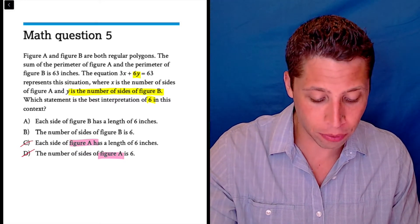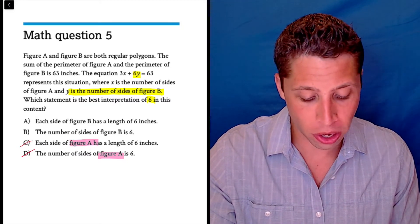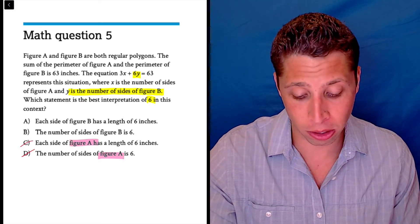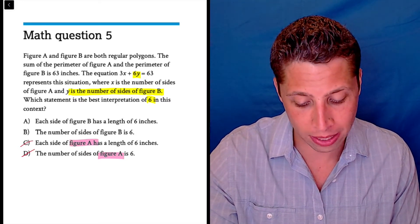So let's see, each side of figure B has a length of six inches, or the number of sides of figure B is six. So I don't know yet what this is all about. Now I'm going to look at the story in a little bit more detail.